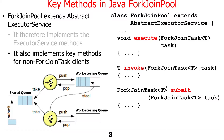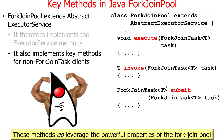Instead, we're going to focus on the methods in ForkJoin pool that execute or arrange to execute ForkJoin tasks: execute, invoke, and submit. These are the methods that non-ForkJoin task clients use to give work to the worker threads in the ForkJoin pool. The fact that the other methods exist is an interesting footnote, but we're not going to use them.